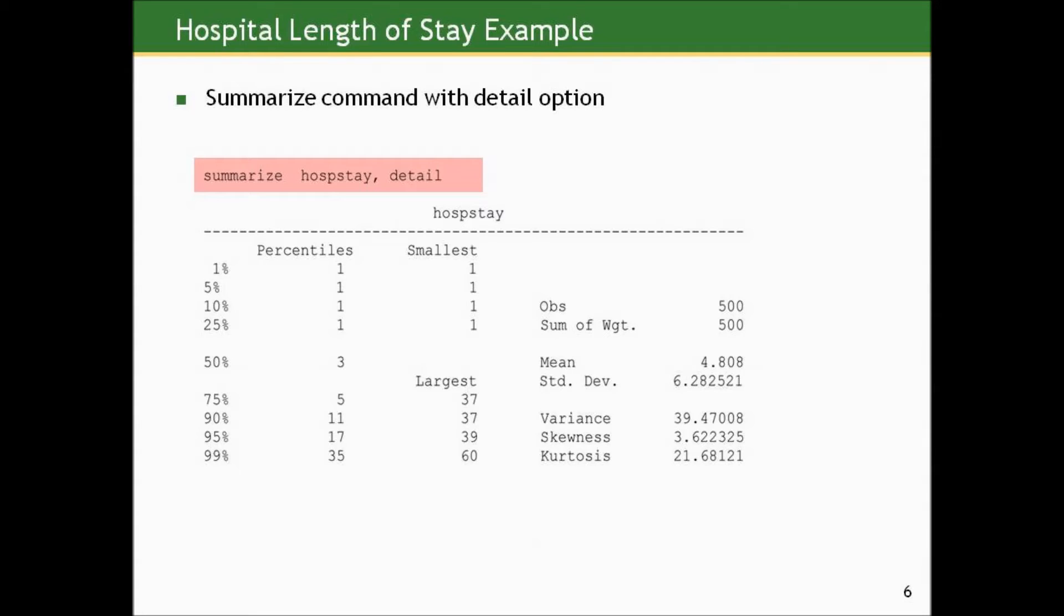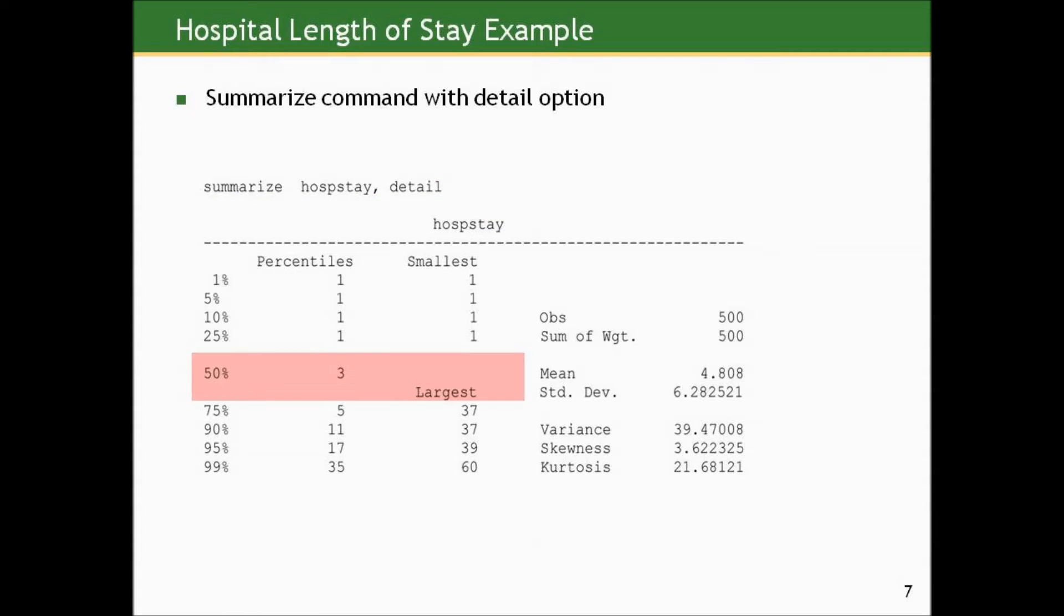So one way to get a little more information out of your summarize command is to put a comma at the end and put the word detail. And in doing that, we not only get the mean and standard deviation, but we get a little more information, including some key percentiles in the data set, including the 50th percentile or the median.